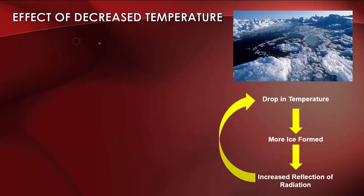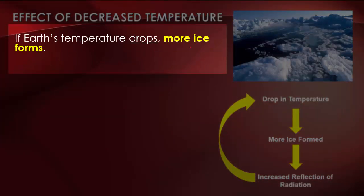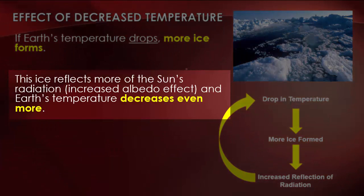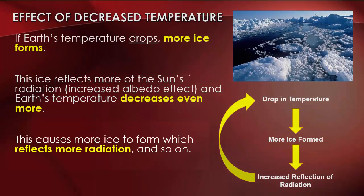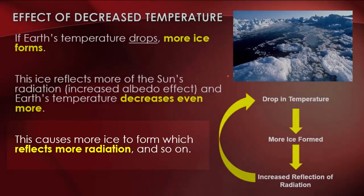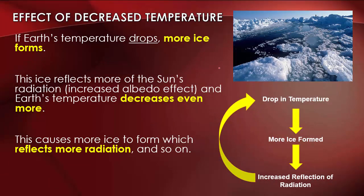Let's write this down in sentences. If Earth's temperature drops, more ice forms. This ice reflects more of the sun's radiation — in other words, there is an increased albedo effect — and Earth's temperature decreases even more. That causes more ice to form, which reflects more radiation and so on. Unchecked, if there wasn't a balance, the temperature would drop, more ice would form, more reflection, more drop in temperature, more ice — it would go round and round. But obviously there's a balance. This is the general effect of decreased temperature.